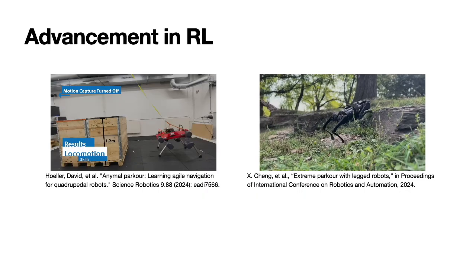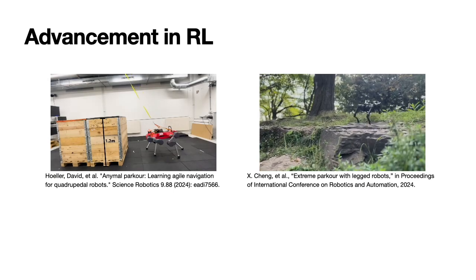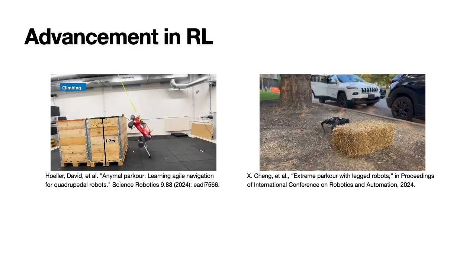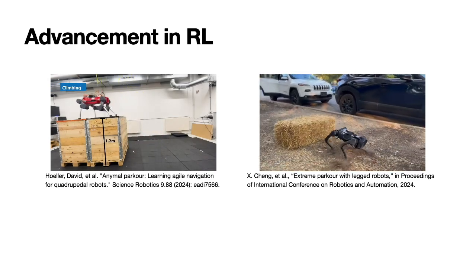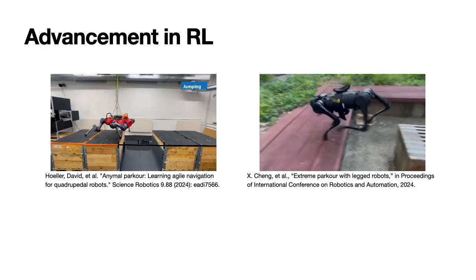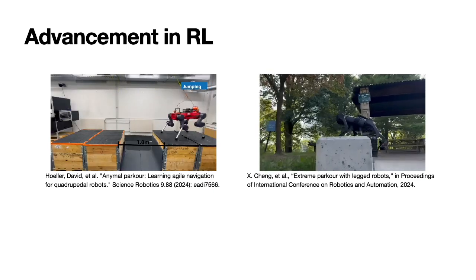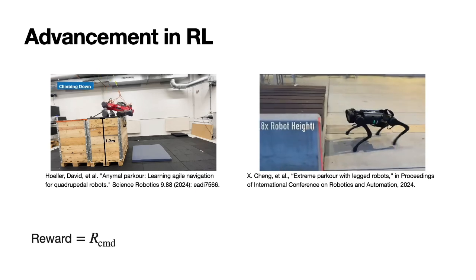Recently, reinforcement learning has made significant progress in the field of legged robots, as demonstrated in these prior works. Achieving such agile movements requires carefully designing a reward function that consists of several terms.